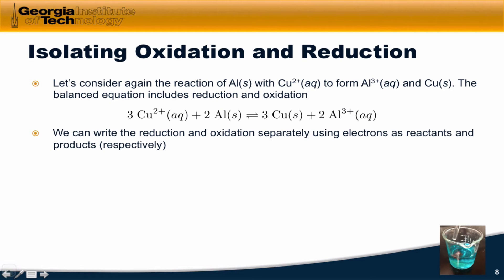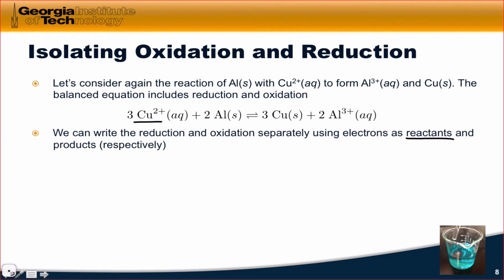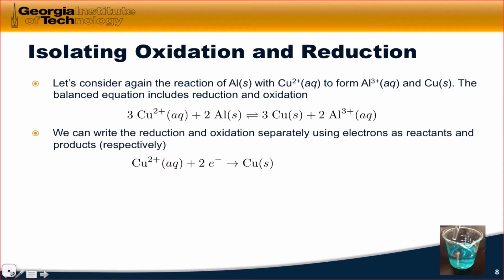What we can do is separate the oxidation and reduction processes and write them separately using electrons as reactants and products. In the reduction, since copper 2+ is gaining electrons, we use electrons as a reactant. Since copper is going from Cu²⁺ to Cu⁰, we need two electrons on the reactant side. Notice that charge is balanced: two positive charges on Cu²⁺ and two negative charges from the two electrons, forming copper 0 as the product. This is the reduction — an uptake of two electrons by the Cu²⁺ cation.